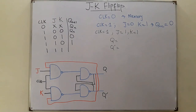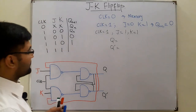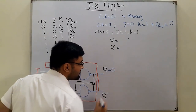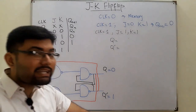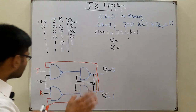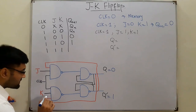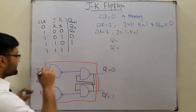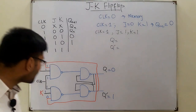Let's assume that previously we had zero at the output Q, which makes Q-complement equal to one. This previous result is fed back as input. So Q equals zero is fed to one gate, K is one, clock is one; Q-complement equals one is at the other gate, J is one, and clock is one.